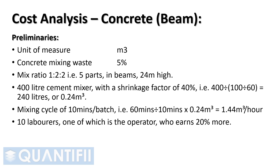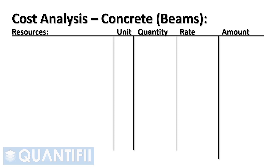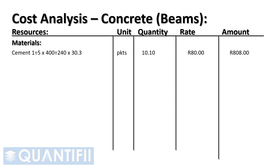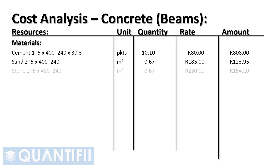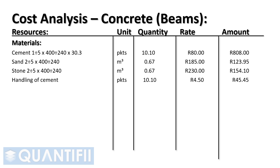10 laborers, one of which is the operator who earns 20% more. Cement: 1 part divided by 5 parts, multiplied by 400 liters divided by 240 liters, multiplied by 30.3 pockets per cubic meter, multiplied by 80 Rand per pocket of cement, equals 808 Rand. Sand: 2 parts divided by 5 parts, multiplied by 400 divided by 240, multiplied by 185 Rand. Stone: 2 parts divided by 5 parts, multiplied by 400 divided by 240, multiplied by 230 Rand. Handling of cement at 10.1 pockets of cement, multiplied by 10% of the laborer's hourly rate.